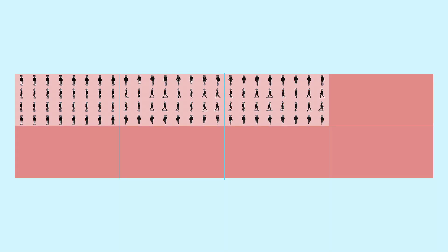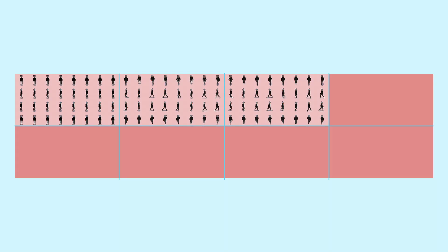The main areas that matter are the first 3 divisions. The first division is for the character's standing frames, or idle animation. The second division is the walking frames. And then the third division is the running frames, which is triggered when the player holds down shift. The bottom row is for diagonal frames, which I'm not using, so ignore that. But you need to account for it in the sprite sheet, so this will be left empty.